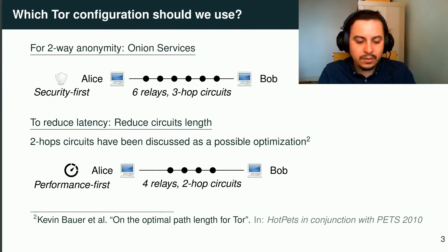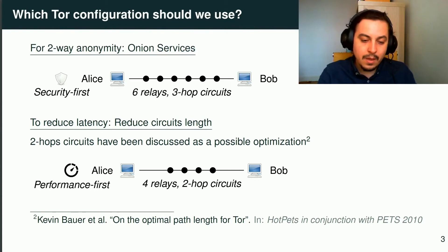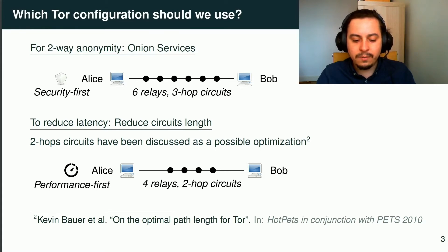I will use the term 'link' to refer to the complete path between the caller and the callee. Currently, this link is made of six relays, which is a lot for an interactive application and will have a negative impact on latency. But thanks to Bauer et al., we know that two-hop circuits instead of three-hop do not break Tor's security model. So we can also consider two-way anonymity with only four relays. In the following, we will evaluate two Tor configurations: a default one and an optimized one.